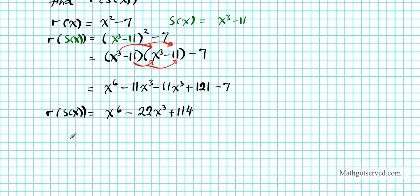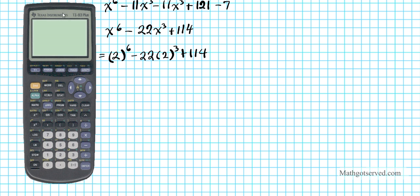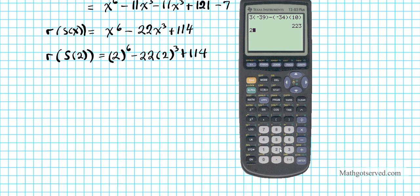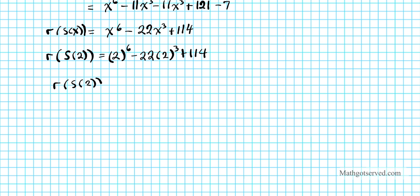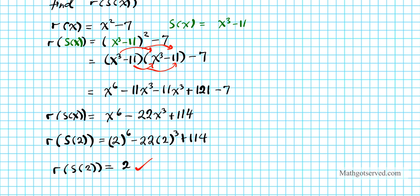Now that we have r of s of x, we're going to evaluate this function at x equals 2. So r of s of 2 becomes 2 to the sixth minus 22 times 2 to the third plus 114. Using our calculator, our answer is 2. So r of s of 2 equals 2. Our answer checks out because this is what we got using the other method — we also got 2. So we're confident that our answer is correct.